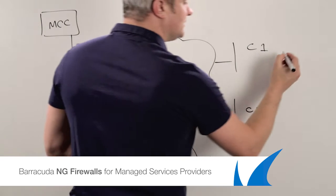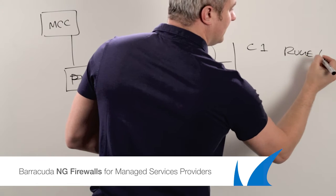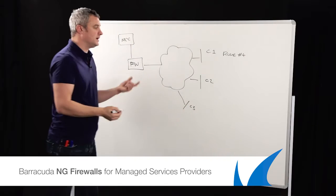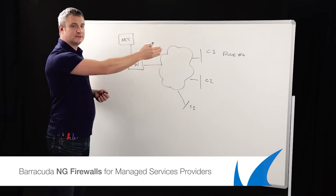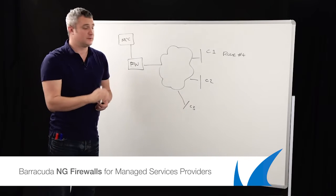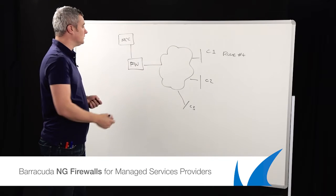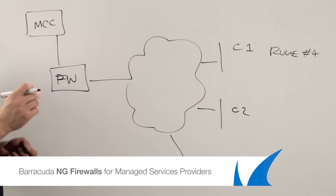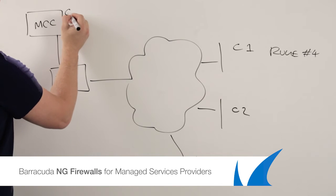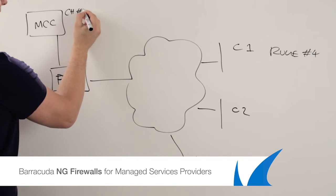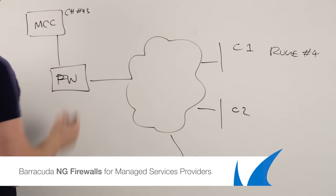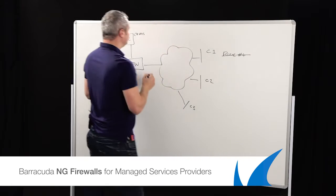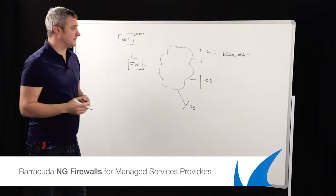So if you make a rule change — say rule number four was done last night and all it did was allow one set of subnets to go to a certain set of subnets on the internet, but it was wrong — you can go straight to here, look for the point, date, and time that you made that change. Call it change number 43, for example. And you can say 'revert that back' — erase it or go back and change that rule altogether.